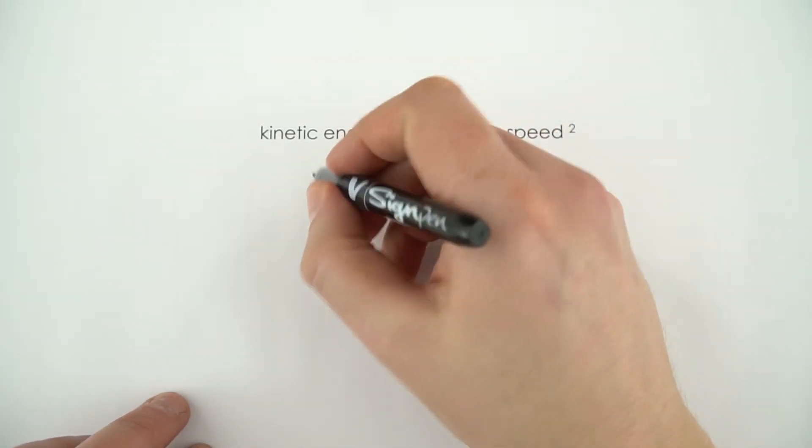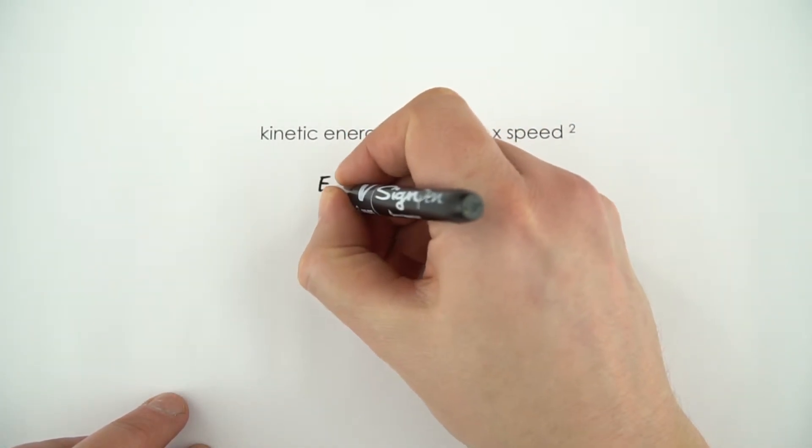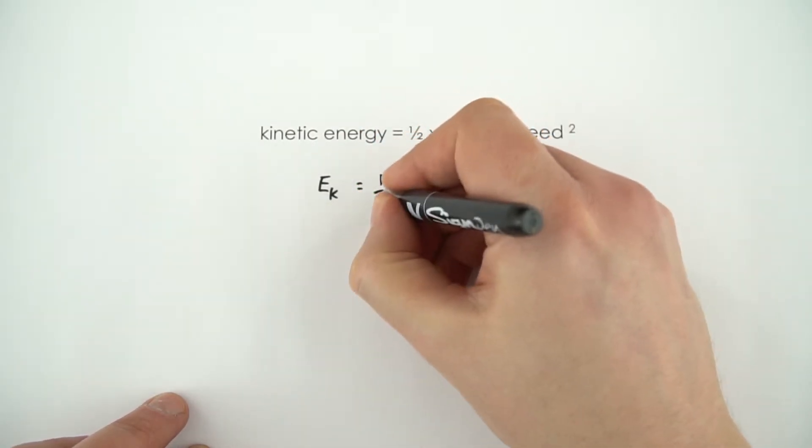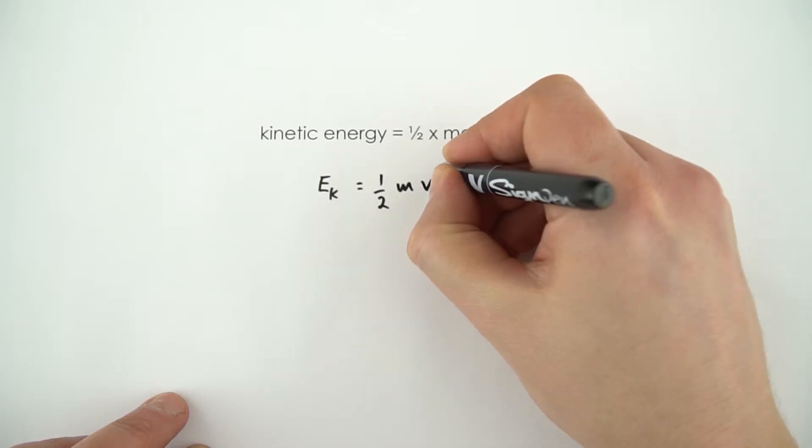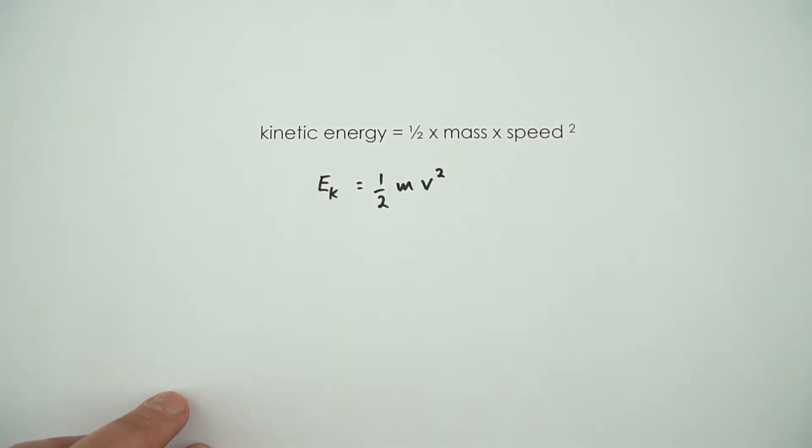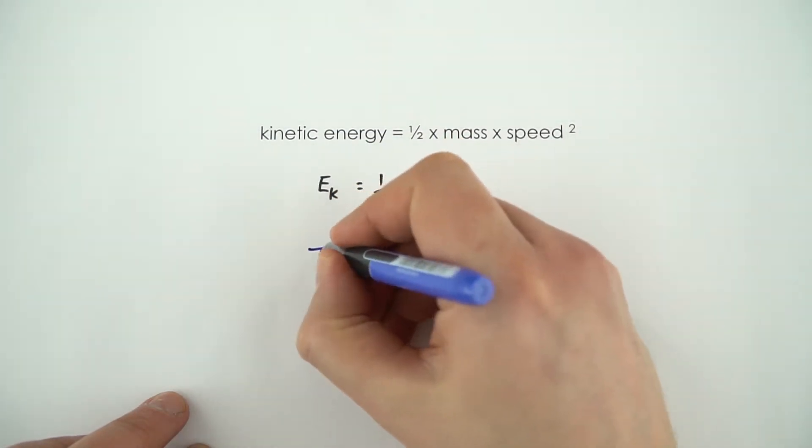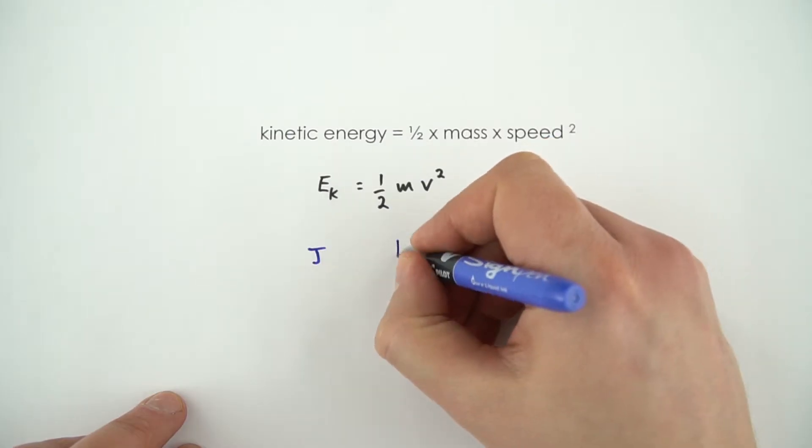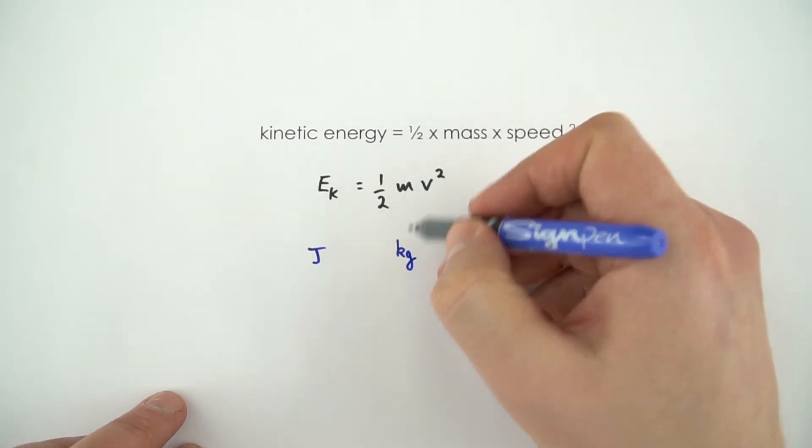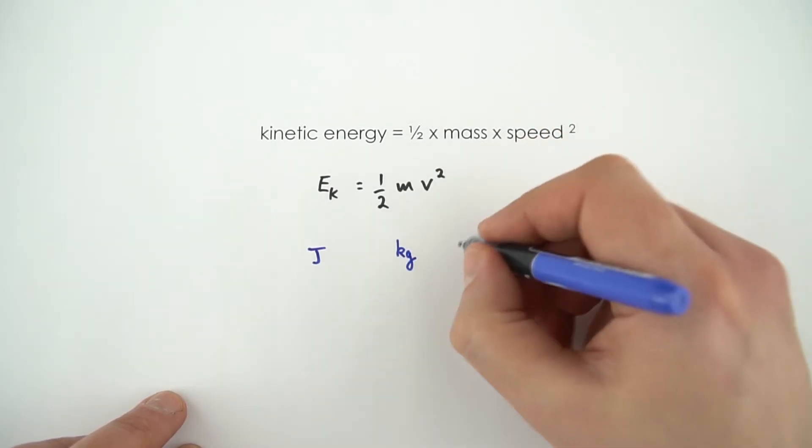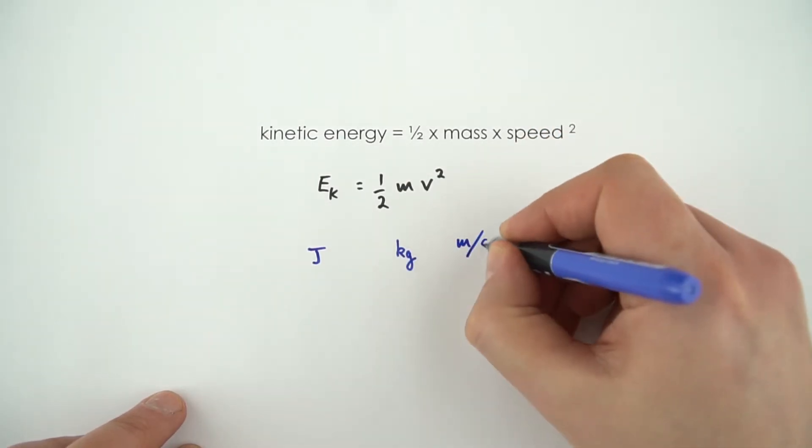In terms of representing this, we can use Ek to represent the energy in the kinetic store, and that's equal to a half mv squared, where we use v to represent speed. When it comes to units, we always measure energy in joules, which is capital J. The mass is measured in kilograms, so if you're given something in grams you need to convert it into this standard unit. And we measure our speed or velocity in meters per second.